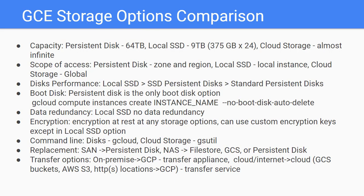Under scope of access, you can configure a zonal or regional persistent disk. Regional persistent disks provide durable storage and replication of data between two zones in the same region. Local SSD provides local block storage directly attached to the VM. Cloud storage buckets can provide worldwide accessibility and worldwide storage locations.